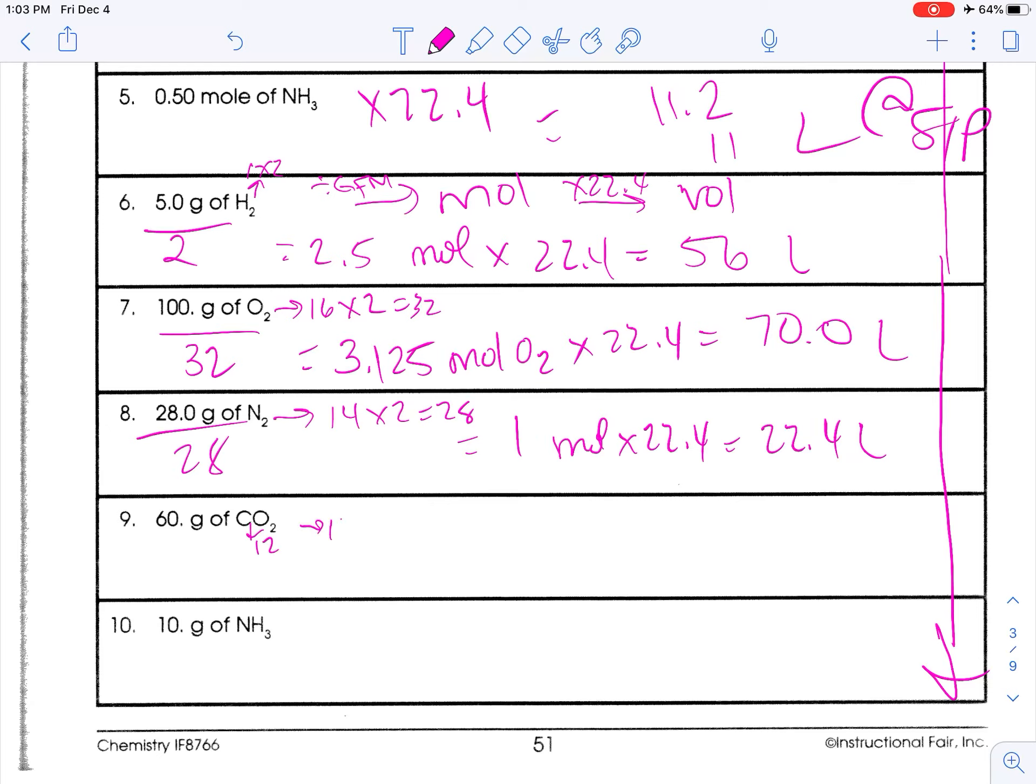CO2. This is 12, and this is 16 times 2. So, that's 32 plus 12. So, GFM is 44 grams per mole. So, 60 divided by 44 is 1.36 repeating moles. Times 22.4. So, I'm not touching my calculator. I have 1.36 repeating on my calculator. I just don't touch it. Times 22.4. And, then I need two sig figs. So, 30.54 rounded to two sig figs is 31 liters. Good.